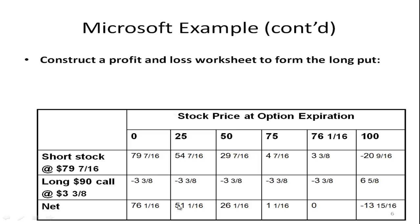How about your call position? Remember the call has an exercise price of ninety, so as long as the price is below ninety, you're not going to use it — you simply lose the premium of three and three-eighths. Once it goes above ninety, for every dollar it goes above ninety, you make a dollar. So if it gets to a hundred a share, you're going to make ten dollars minus the three and three-eighths that you paid for the call option. Summing each column, if the price falls to zero your payoff is seventy-six and one-sixteenth, not seventy-nine and seven-sixteenths, because you paid the call premium. Likewise, if the price falls to twenty-five, instead of making fifty-four and seven-sixteenths, your net profit is fifty-one and one-sixteenth after subtracting the cost of the call.